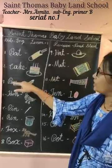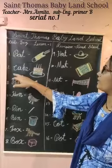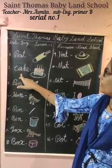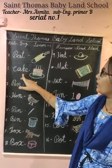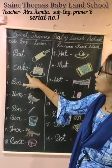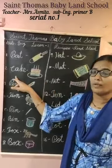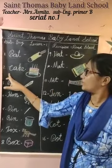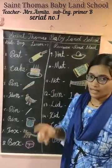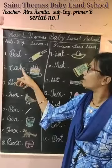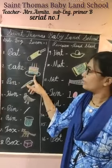The next one is cake. C, A, K, E — cake. Read with me: C, A, K, E — cake.